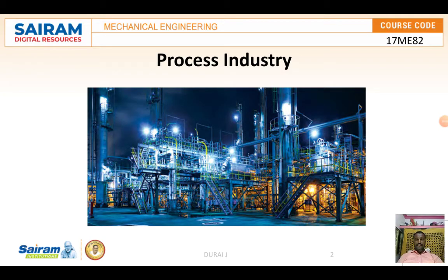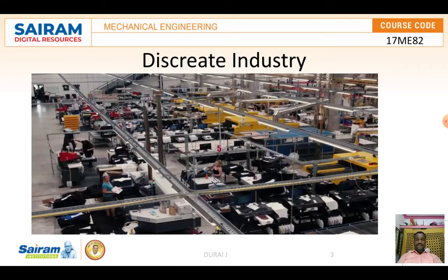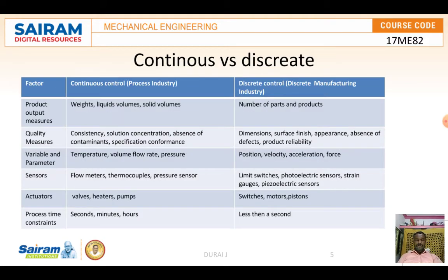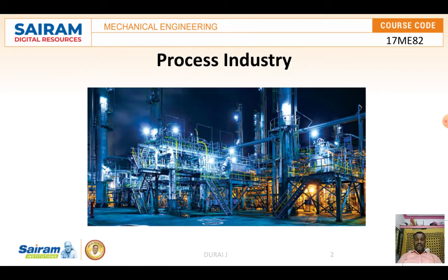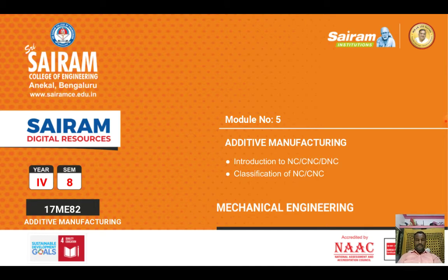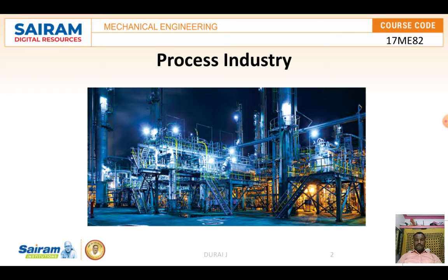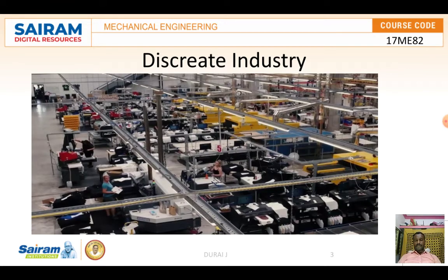Good evening everyone. In this video we are going to discuss process industries and discrete industries, the difference between them, as well as continuous control and discrete control. First, process industries are based on processes like chemical processes, extracting oils from the earth, and pharmaceutical companies. For discrete industries, the automotive sector is an example.